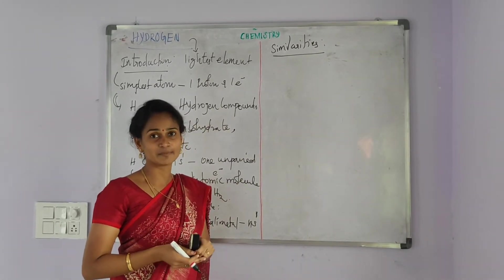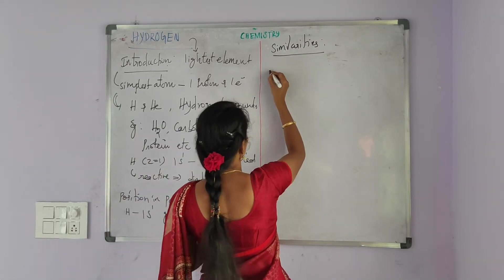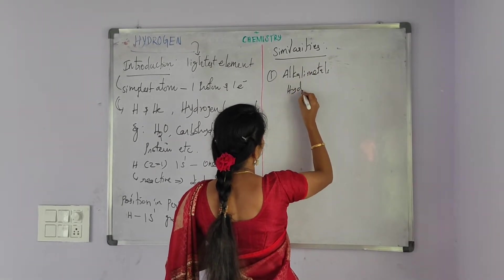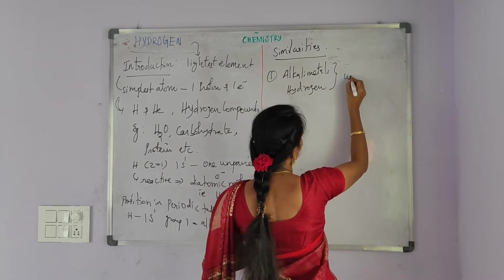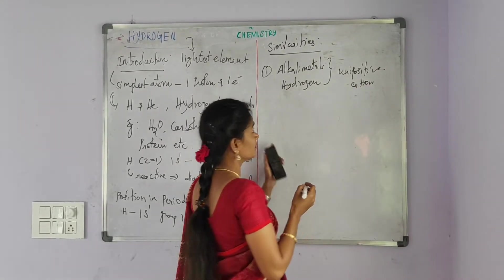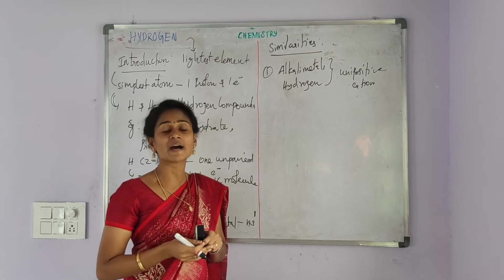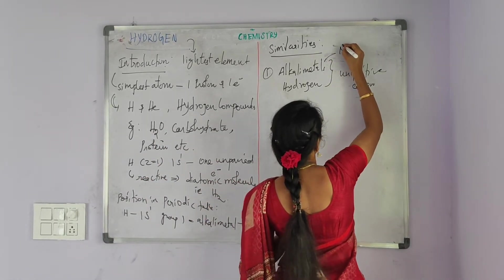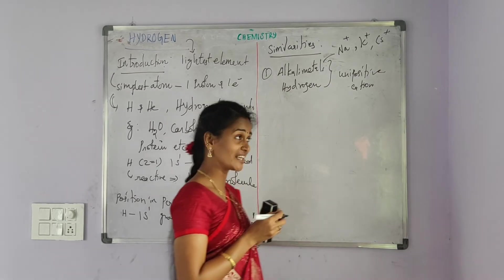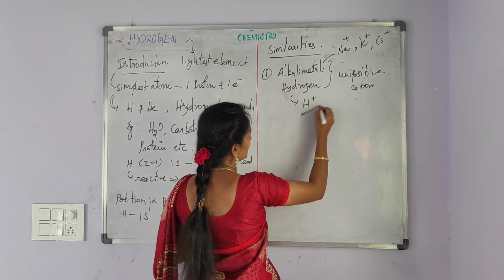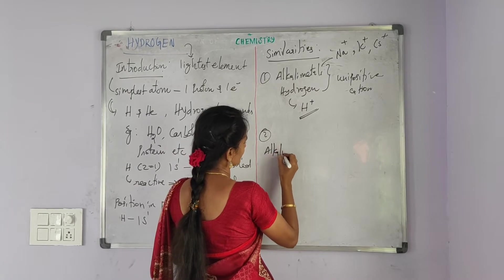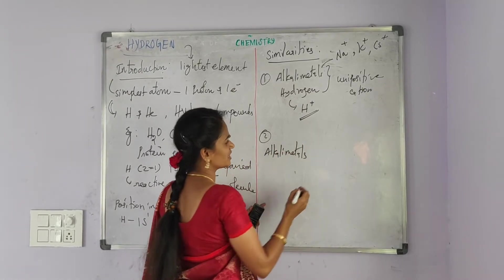We will discuss the similarities between hydrogen and alkali metals. First, alkali metals and hydrogen both have the tendency to form unipositive cations. Alkali metals form unipositive cations such as Na⁺, K⁺, Cs⁺, etc.